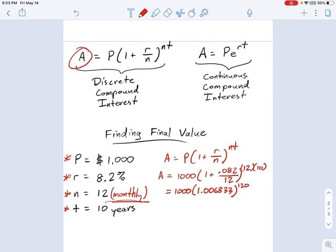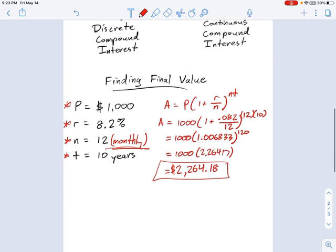So if I take that parentheses value, that 1.0068, and I raise it to the 120th power, I get 1,000 times 2.26417. And then times 1,000 is your last step. So we get $2,264.18. Okay, so nice return on that investment, considering all you had to do was wait and let the market make it grow.